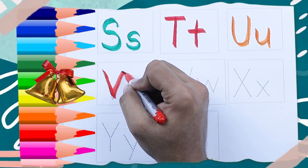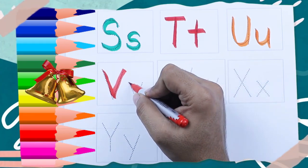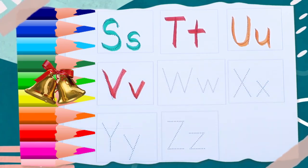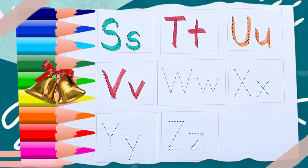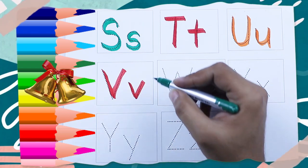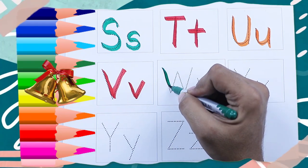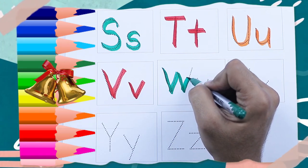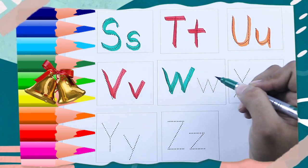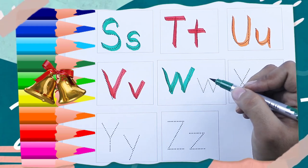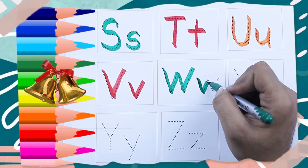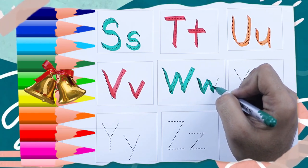Red color capital V — V for Van. Red color small v — v for Van. Green color capital W — W for Watch. Green color small w — w for Watch.